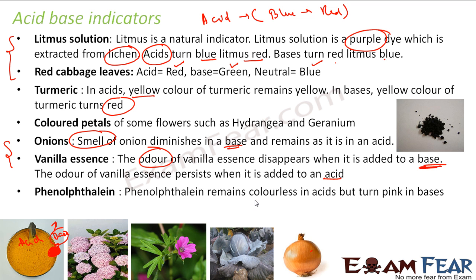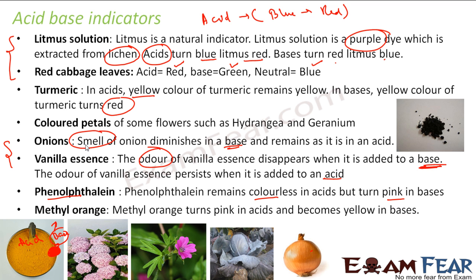Phenolphthalein remains colorless in acid, but turns pink in base. Methyl orange turns pink in acid and yellow in base.